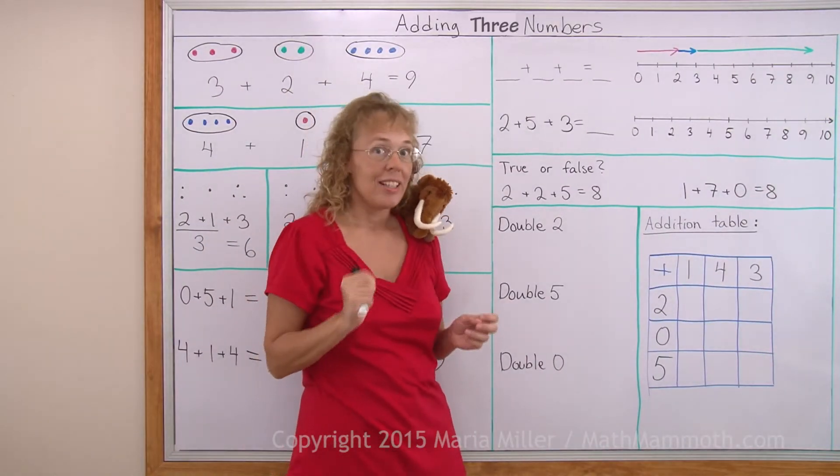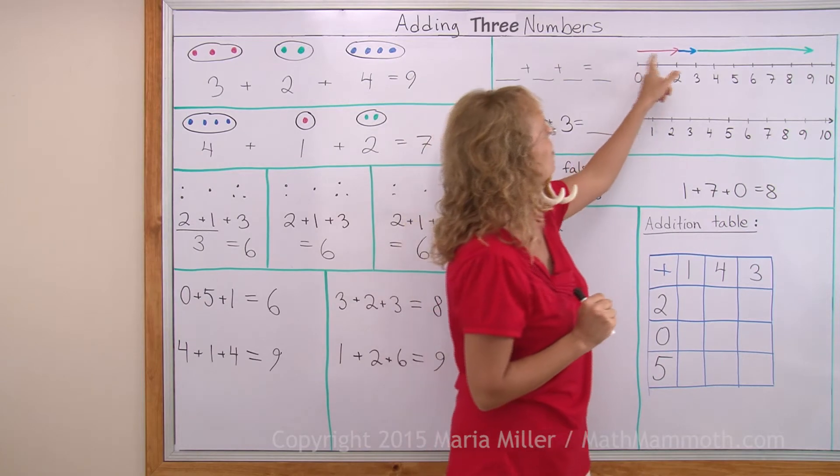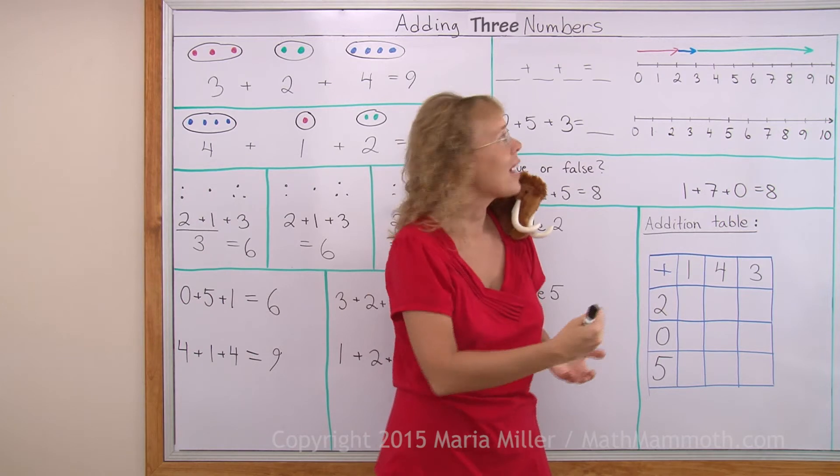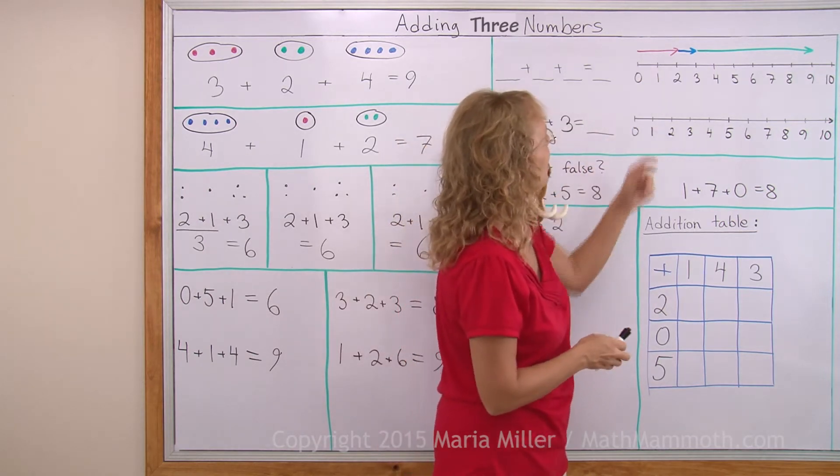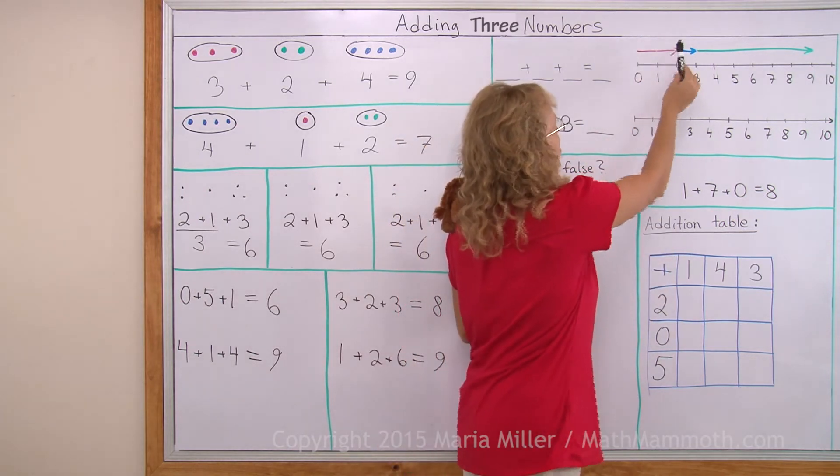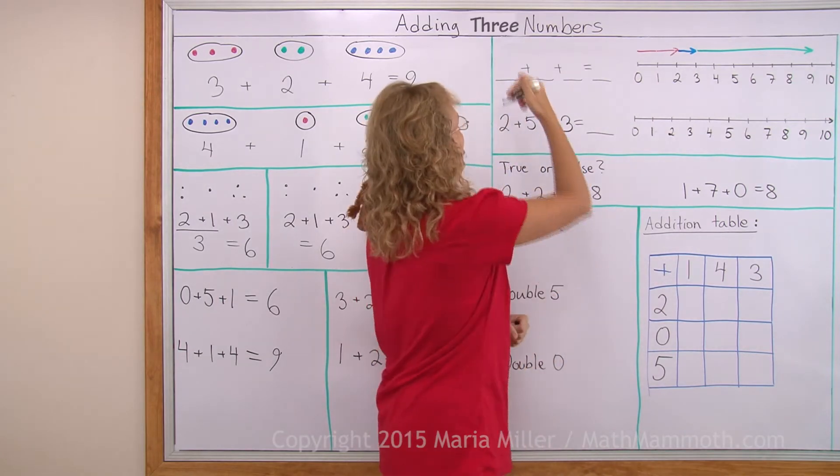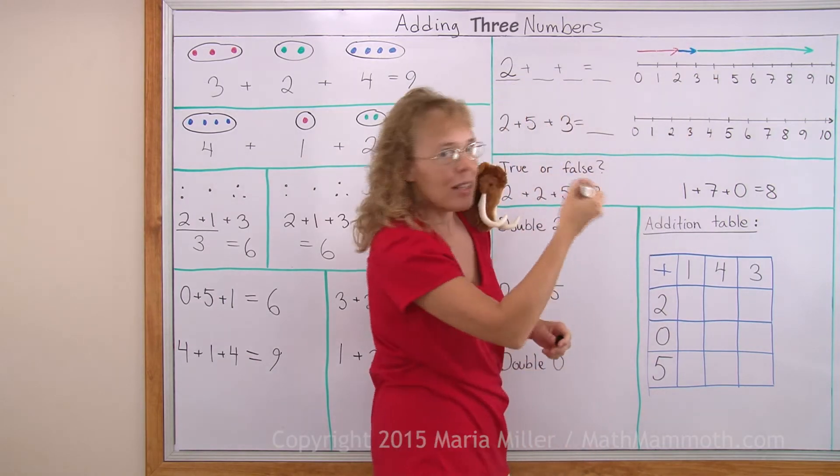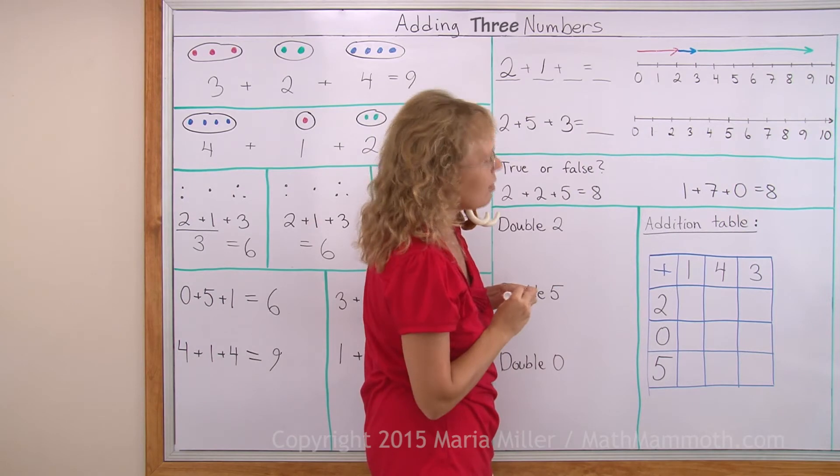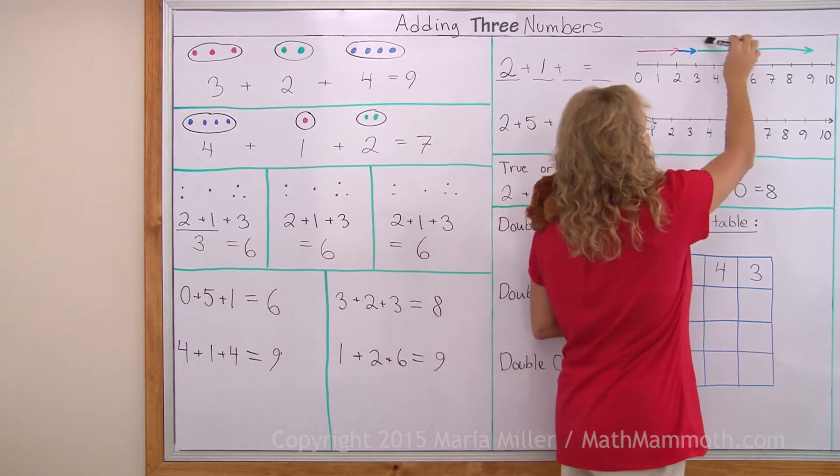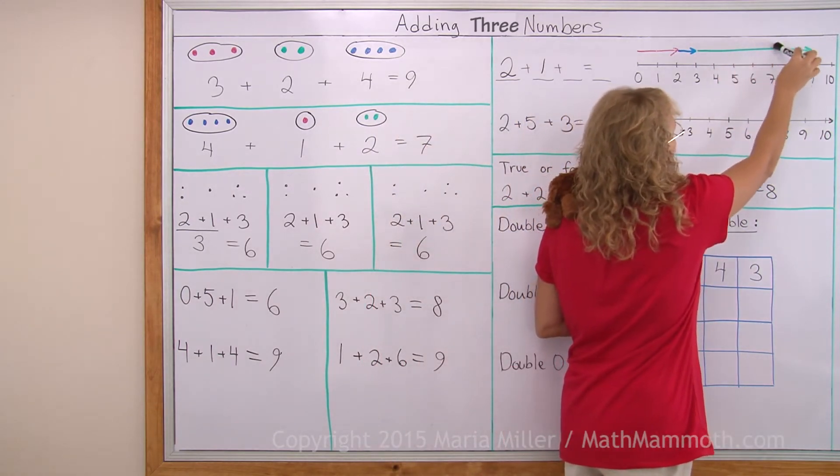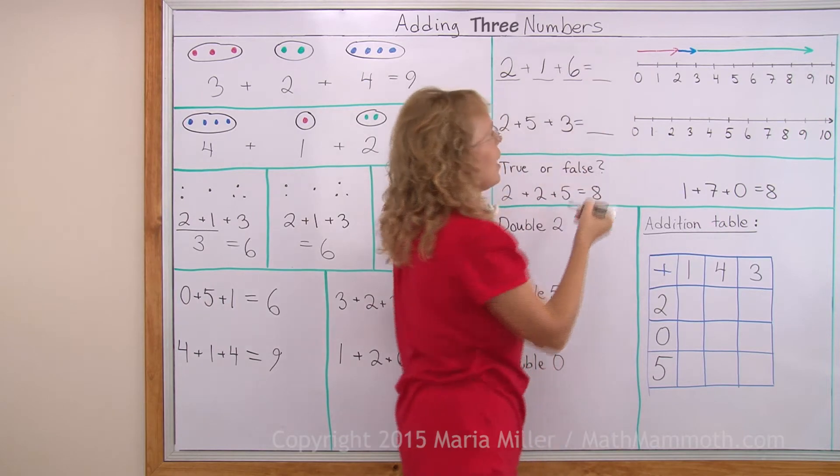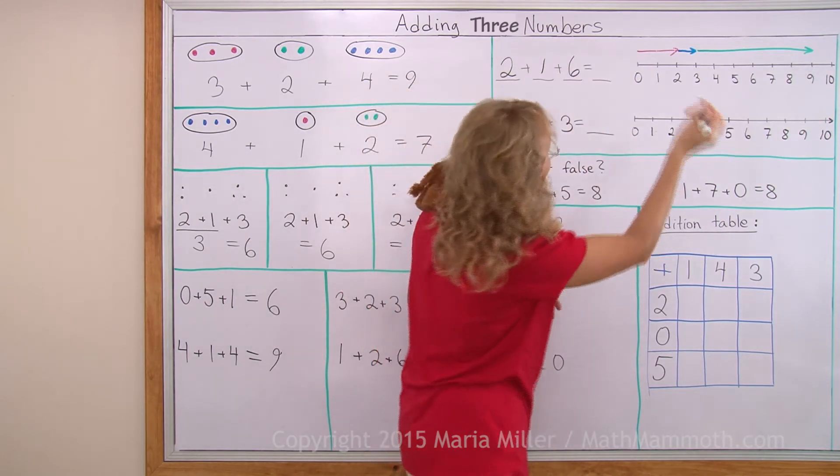Now let's look at number line additions too. Here we have three arrows, so we have three numbers to add. The first number, the first arrow is two units or two little jumps long, so it is two. The next, the blue arrow is just one little jump or one unit. And then the last, the long green arrow, how long is it? One, two, three, four, five, six units or six little jumps long. And in the end, where do we end up? At nine.